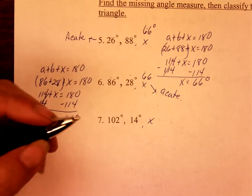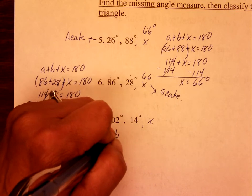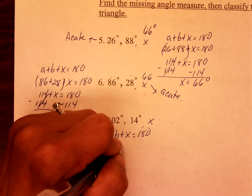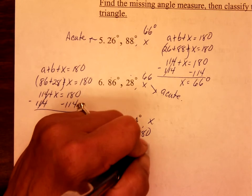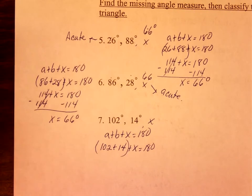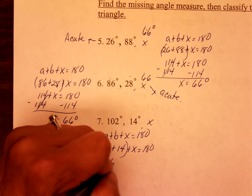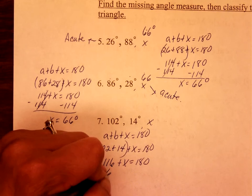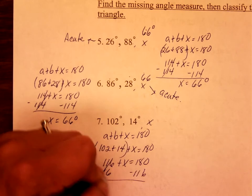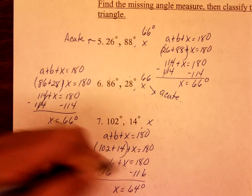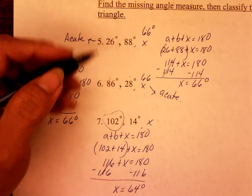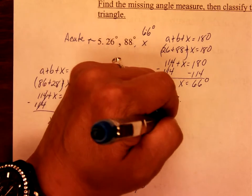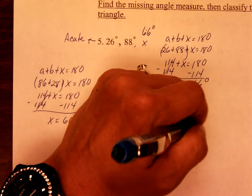Last one: a plus b plus x is equal to 180. 102 plus 14 plus x is equal to 180. Add up 102 plus 14 and you get 116 plus x is equal to 180. Subtract 116 on both sides, and x is equal to 64 degrees. 102 is greater than 90, so that means it's obtuse. If you have even one obtuse angle, the triangle has to be obtuse.